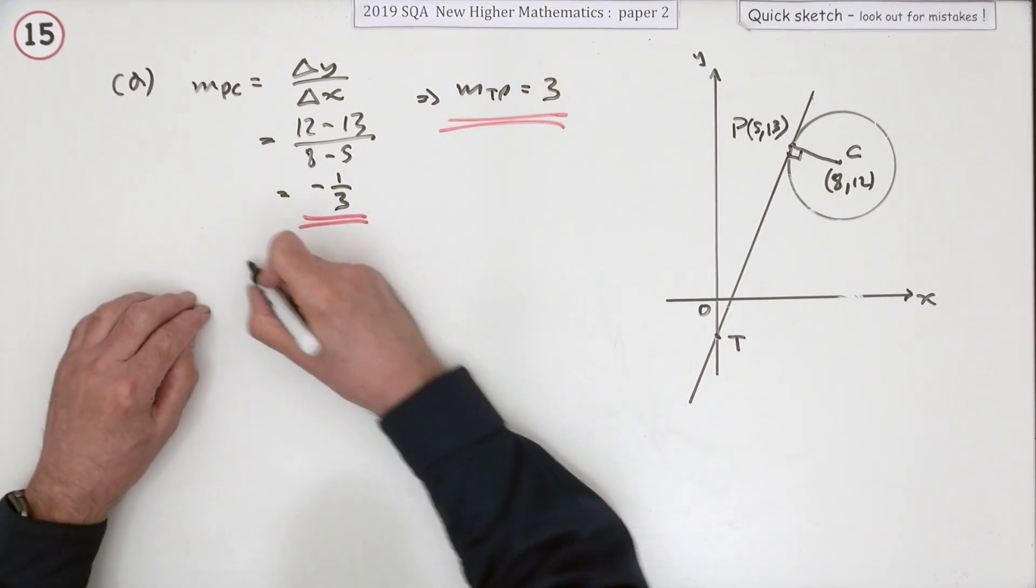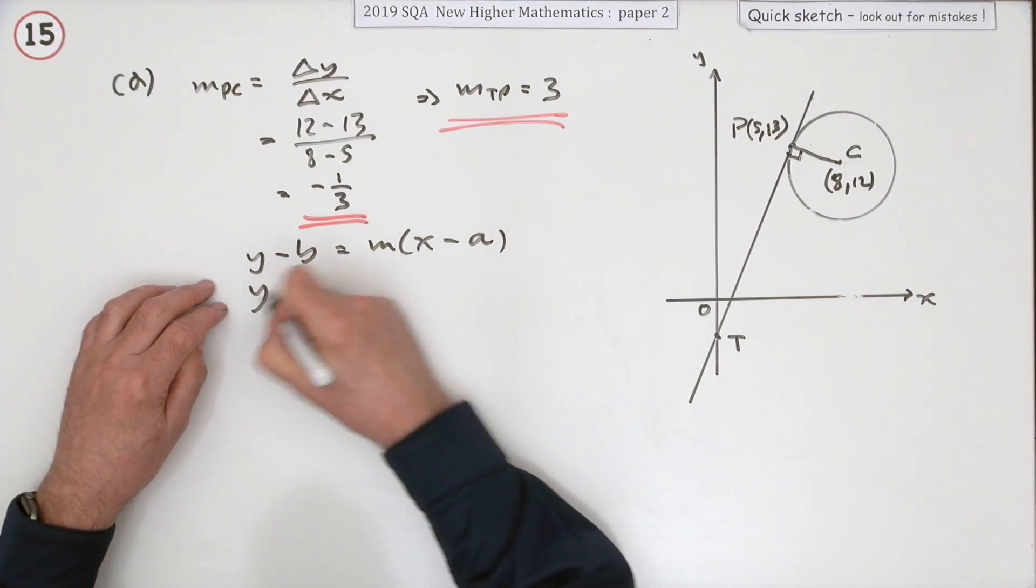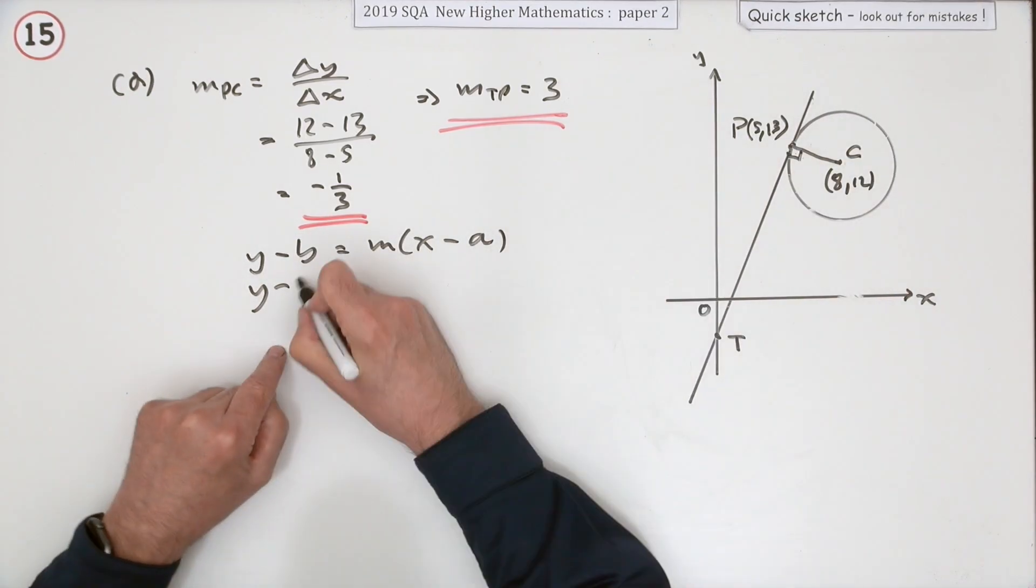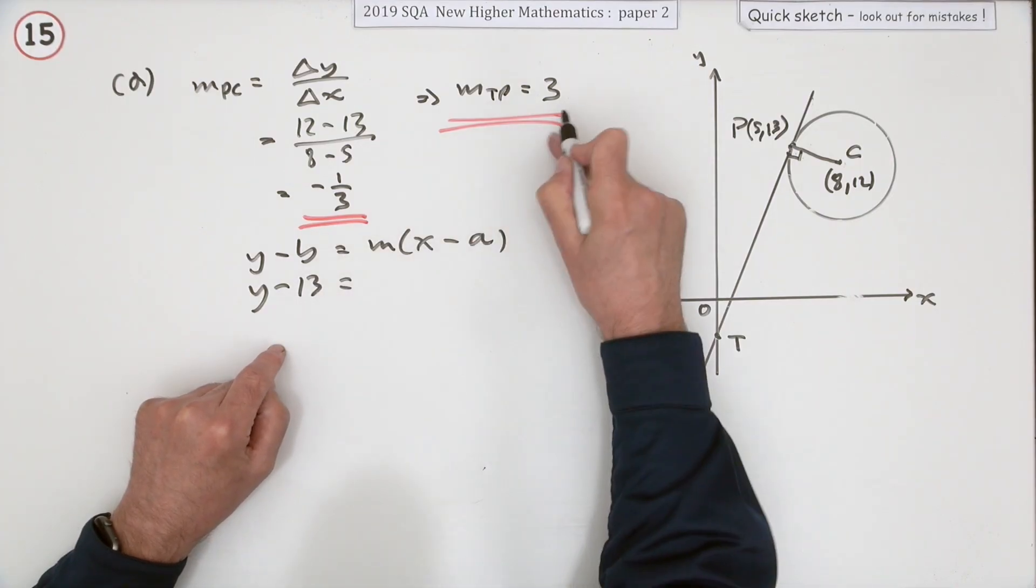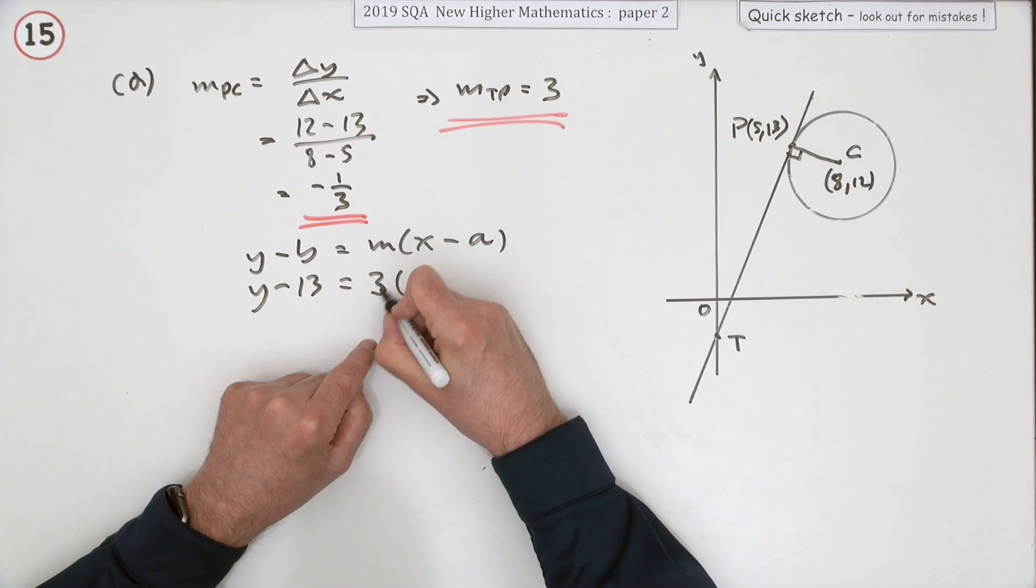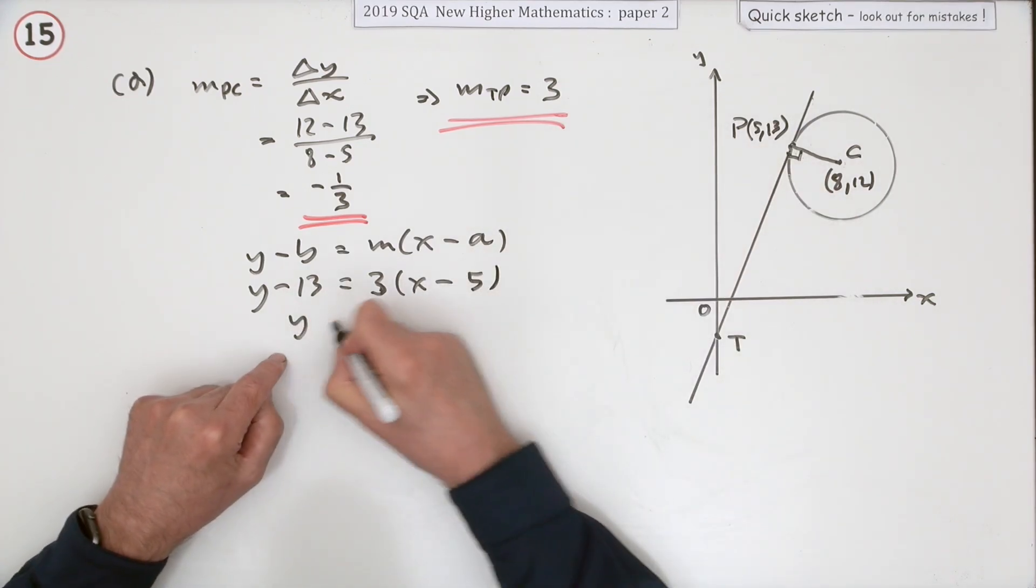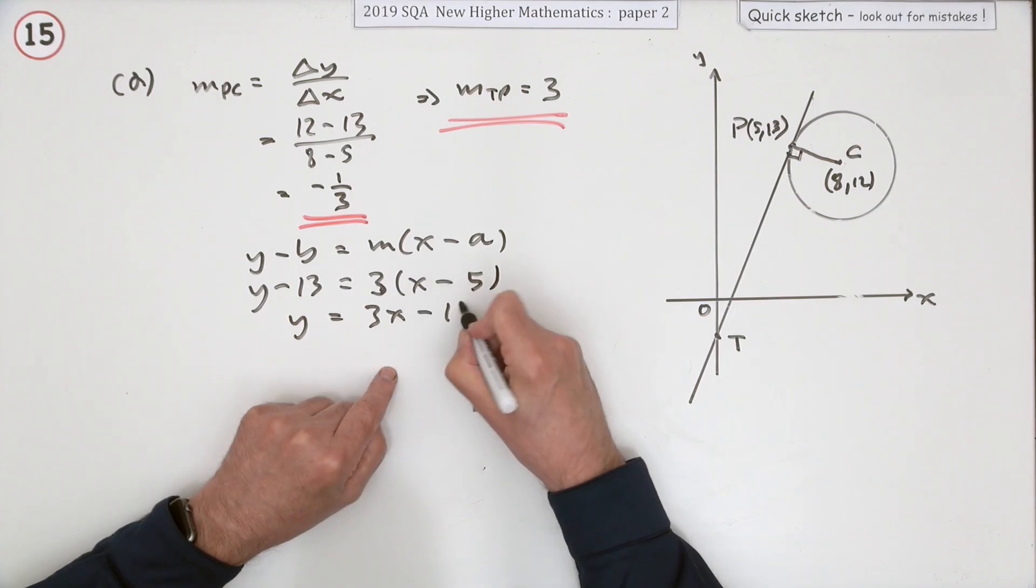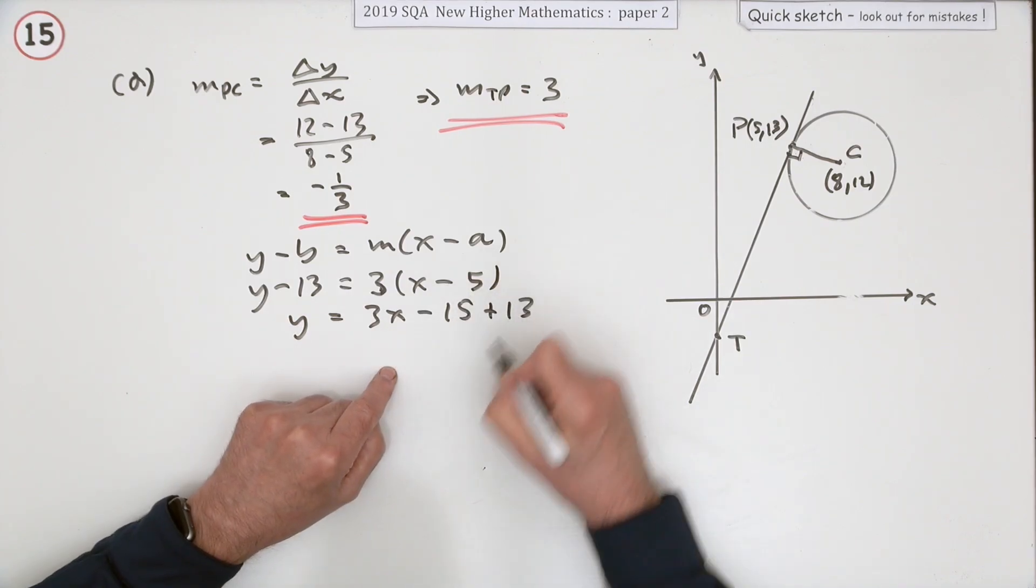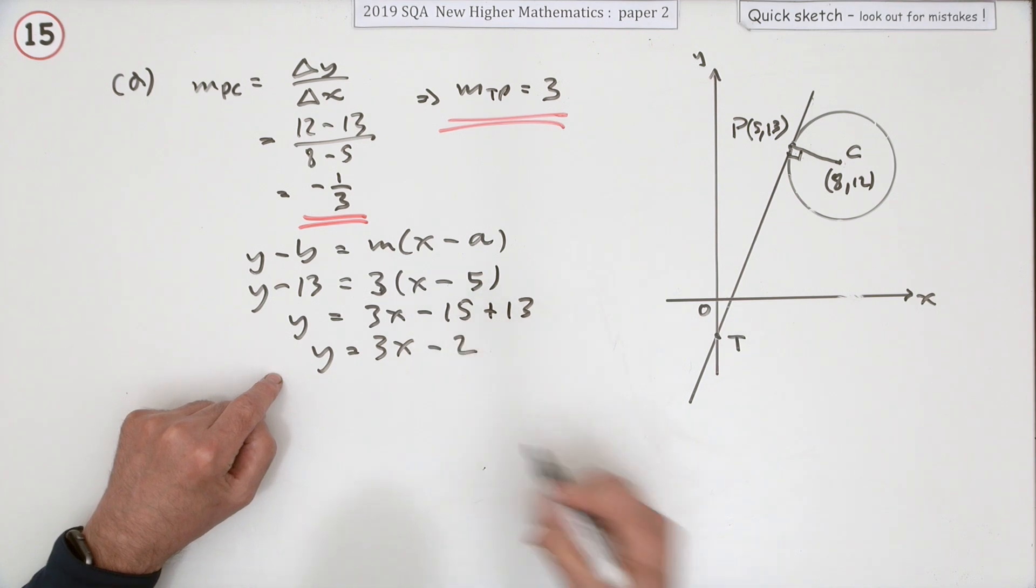So what's the equation of the line then? y minus b is mx minus a. y minus the y coordinate, 13, is the gradient, 3, that looks about right, steep, x minus the x coordinate, which is 5. So you've got y is 3x minus 15, but plus 13, so y equals 3x minus 2.